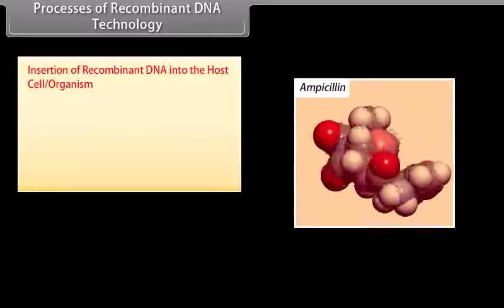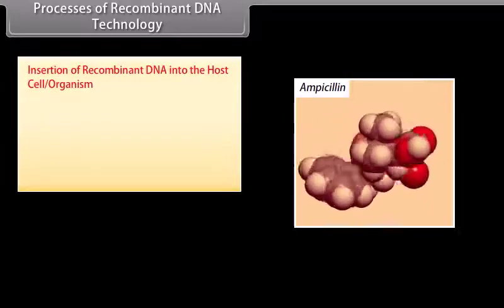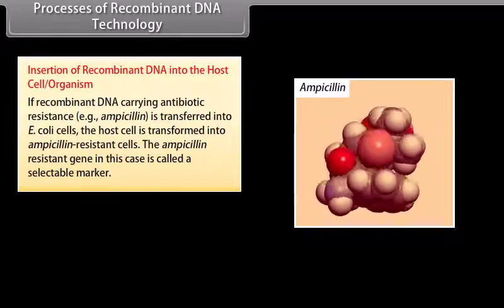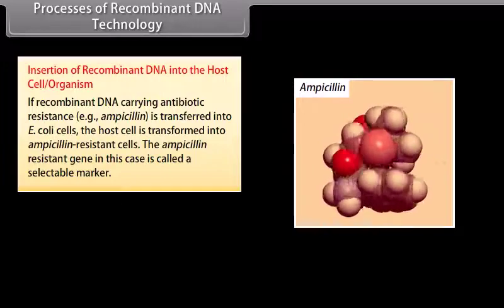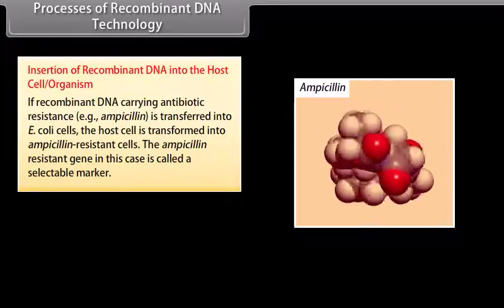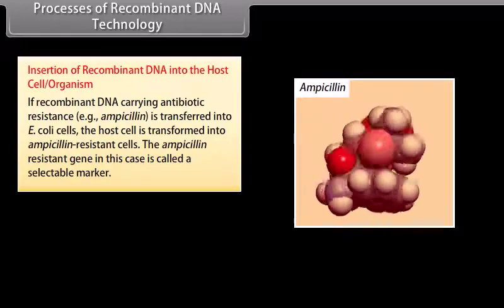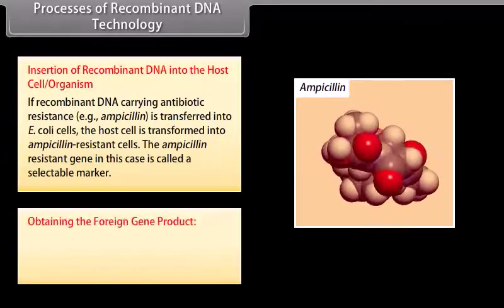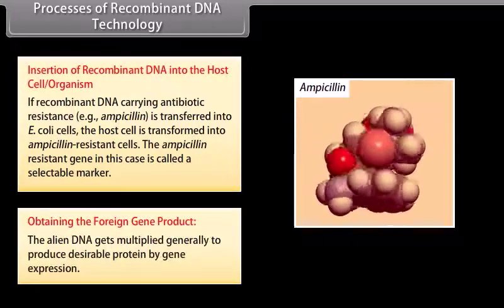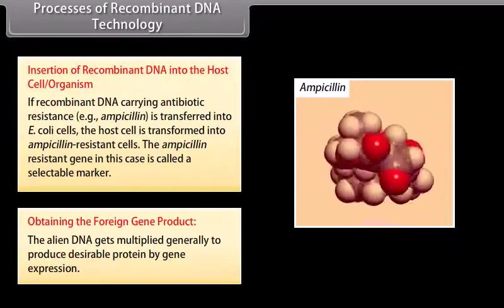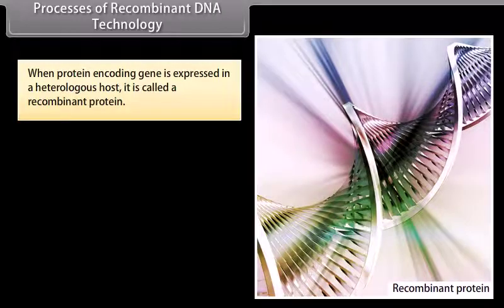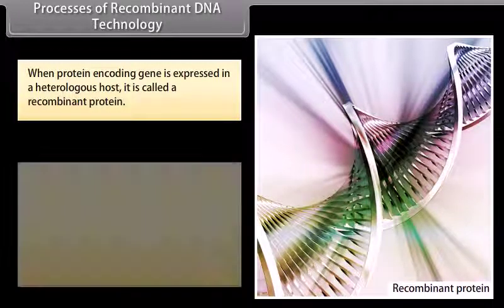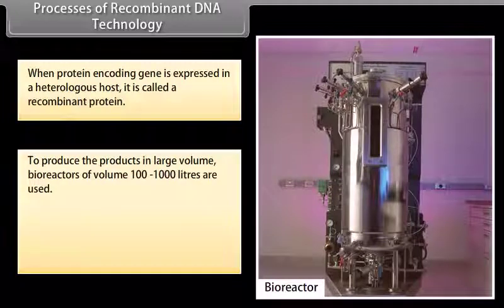Insertion of recombinant DNA into the host cell organism. If recombinant DNA carrying antibiotic resistance — that is, ampicillin — is transferred into E. coli cells, the host cell is transformed into ampicillin-resistant cells. The ampicillin-resistance gene in this case is called a selectable marker. Obtaining the foreign gene product: the alien DNA gets multiplied and generally produces the desirable protein by gene expression. When a protein-encoding gene is expressed in a heterologous host, it is called a recombinant protein. To produce products in large volume, bioreactors of 100 to 1000 liters are used.